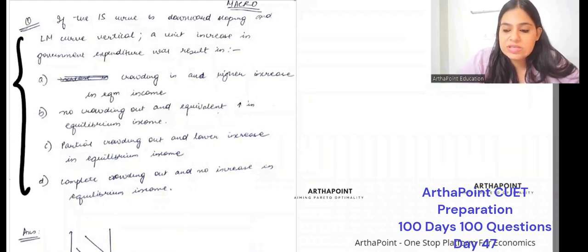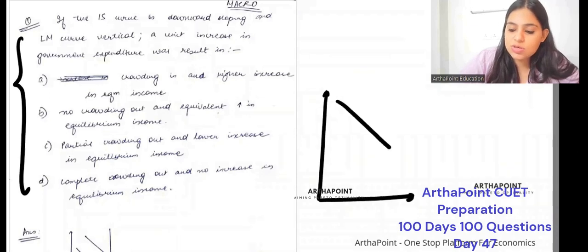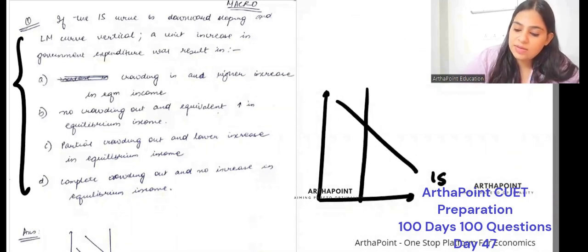If the IS curve is downward sloping and LM vertical,